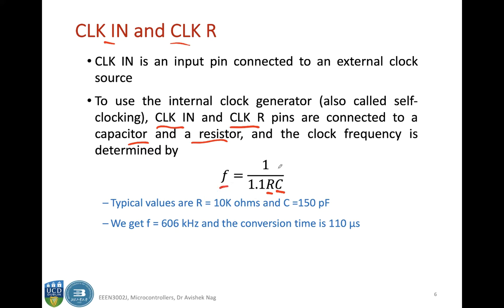The frequency is given by this relationship. Typical values are R of 10 kilo ohms and C of 150 pico farads, which gives a frequency of 606 kilohertz and a conversion time of 110 microseconds.